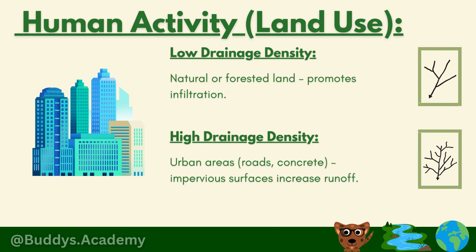The last factor is human activity or land use. For low drainage density there needs to be natural or forested land, where lots of vegetation and soil absorb water, reducing surface runoff. For high drainage density it occurs in urban areas — concrete, roads, and pavements are impervious surfaces that water cannot flow through. Since water can't soak in, it runs off quickly, increasing drainage density with more streams and drains.